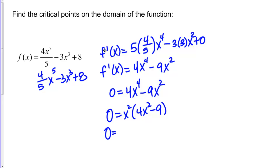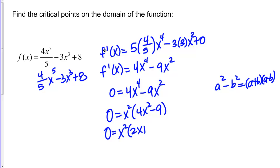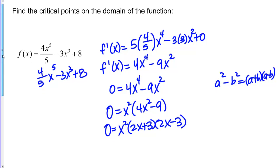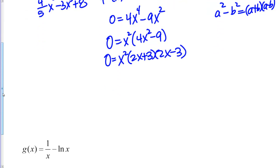Hopefully you notice that 4x² − 9 is a difference of squares. Recall that a² − b² factors as (a + b)(a − b). Factoring this difference of squares gives (2x + 3)(2x − 3). So the full factored form is 0 = x²(2x + 3)(2x − 3). Setting each factor equal to 0: x² = 0, 2x + 3 = 0, and 2x − 3 = 0.